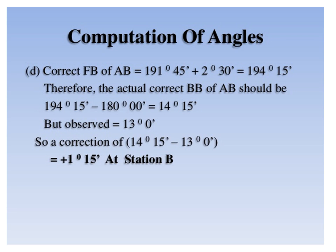Therefore, corrected fore bearing of AB equals 191 degrees 45 minutes plus 2 degrees 30 minutes, since 2 degrees 30 minutes is the correction applied at station A. So the corrected fore bearing of line AB equals 194 degrees 15 minutes. Since this fore bearing is greater than 180 degrees, you subtract 180 degrees to get the corrected back bearing of that line, which gives 14 degrees 15 minutes as the corrected back bearing of line AB.